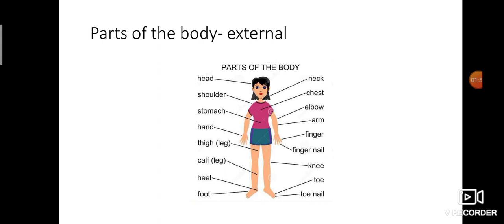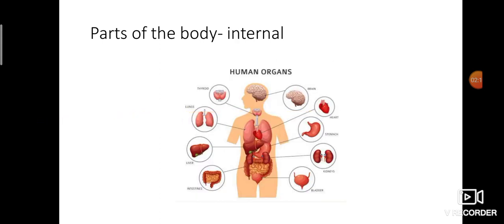Those are the external parts of the body. The external parts of the body are: head, shoulder, stomach, hand, thigh, calf, heel, foot, neck, chest, elbow, arm, finger, fingernail, knee, toe, and neck. These are the external parts of the body.